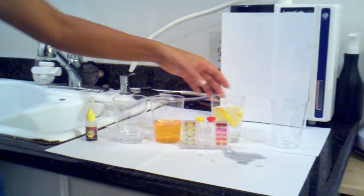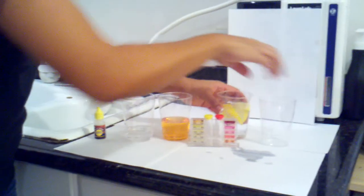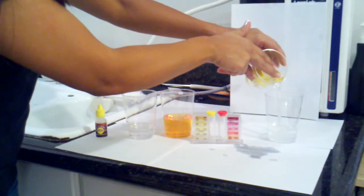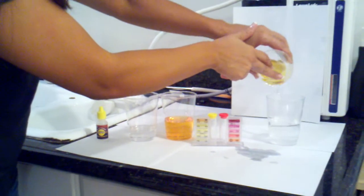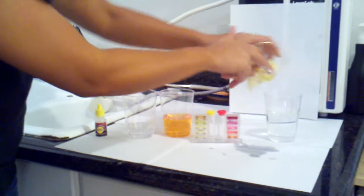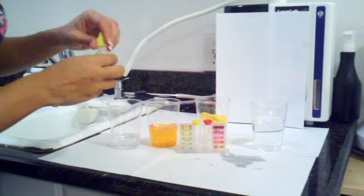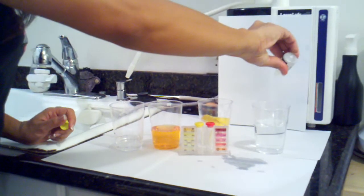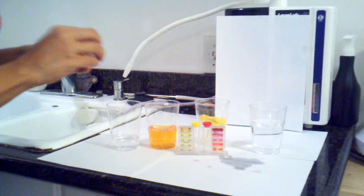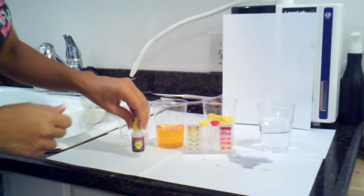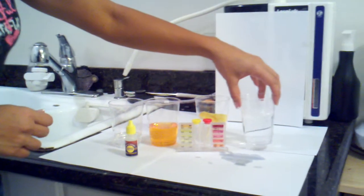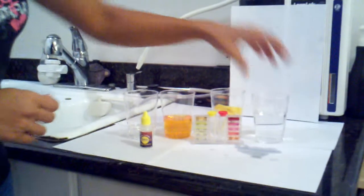Next, she's going to dump the water from the cup with lemons into the other cup and add seven drops of the OTO into that water. And you'll see that that water is also not turning yellow.